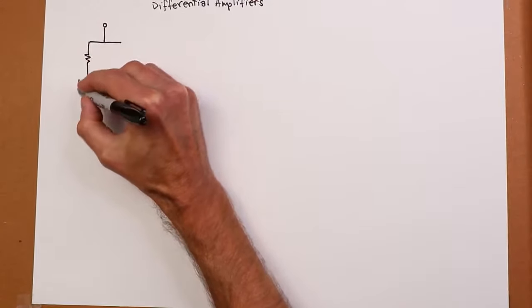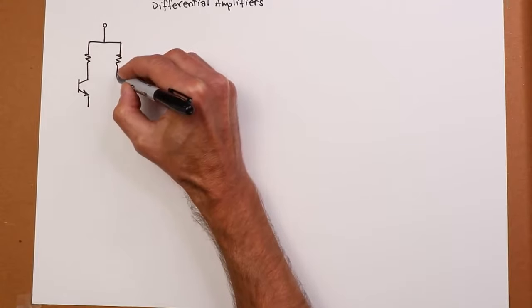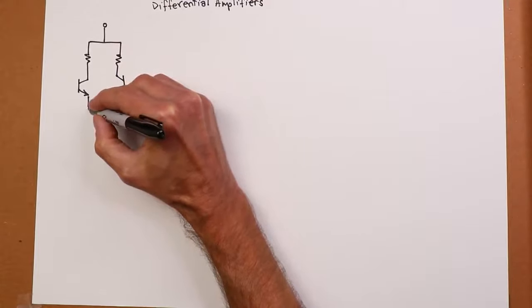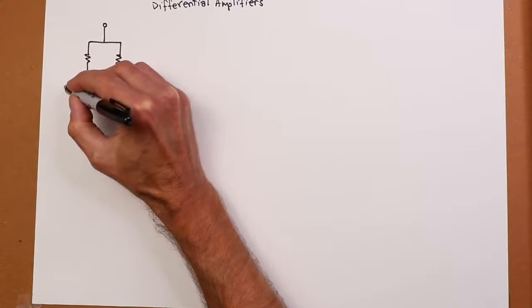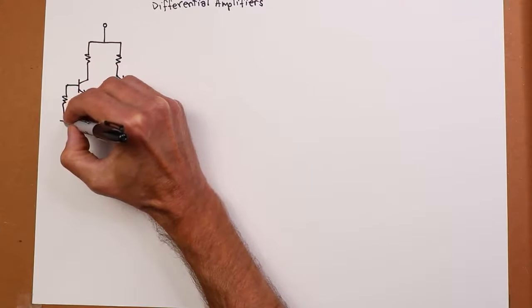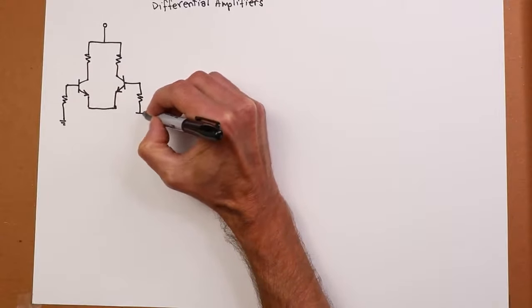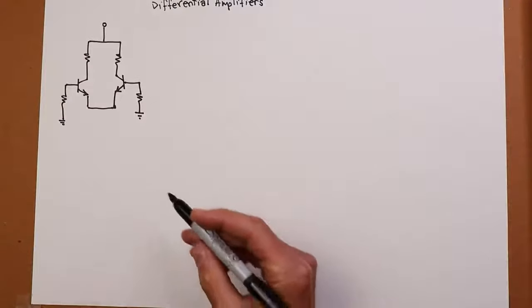I'm going to use bipolar transistors on this, although you could just as easily make a diff amp from JFETs or MOSFETs. I'm drawing NPNs, but you could also use PNPs. You could use Darlingtons. You have options! So we're just going to look at the DC version of this.